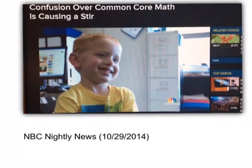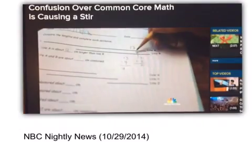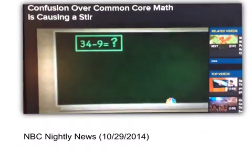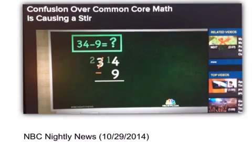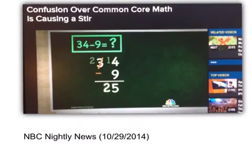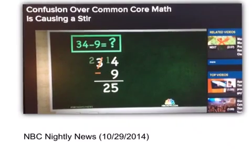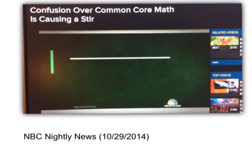But for some, Common Core is creating common confusion. Take 34 minus 9. Many would say that's relatively simple. Carry the 1, 14 minus 9 is 5, bring down the 2, you get 25. Under Common Core, second graders learn different methods and need to show all steps.